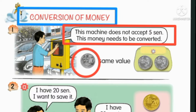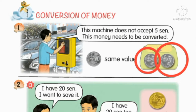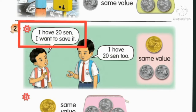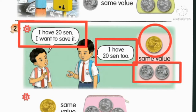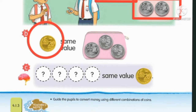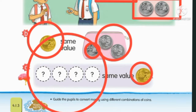Here we have 10 cents — 5 cents and 5 cents to convert into 10 cents. 10 cents is the same value as two 5 cents. I have 20 cents. I want to save it. I want 20 cents to have the same value as two 10 cents. 20 cents have the same value as one 10 cent and two 5 cents. What here is the same value as 20 cents?